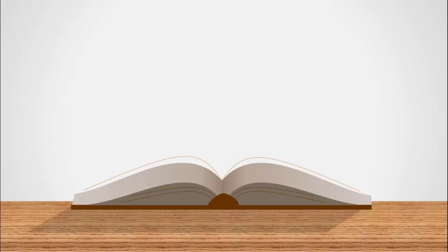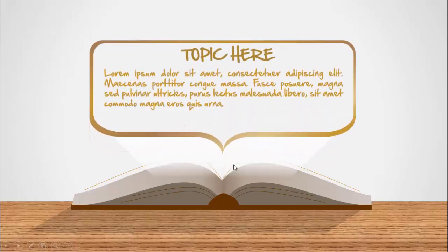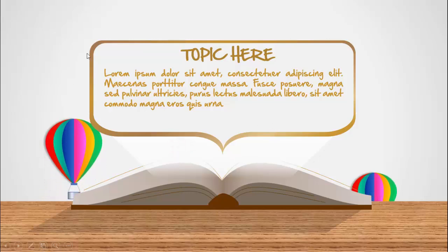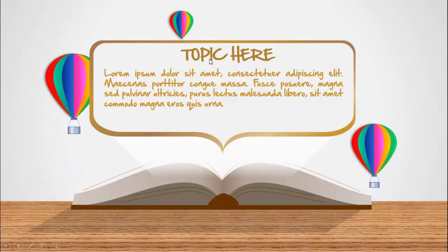In today's tutorial I'm going to show you how to create an open book design with text space. Here I have created this open book completely in PowerPoint and added some shadow effects. When I click, a light comes out from this book, then the text will appear where you can add the title and detail text. I've added a few hot air balloons — depending on your requirement you can change the text and add more designs in the background.